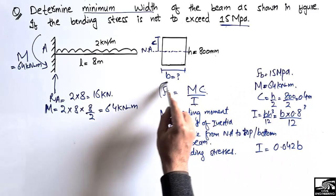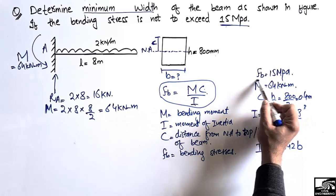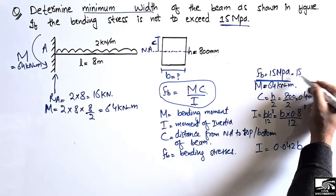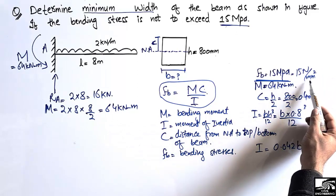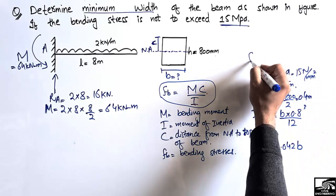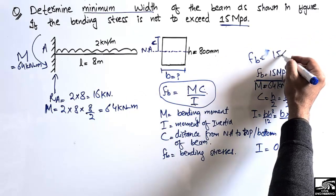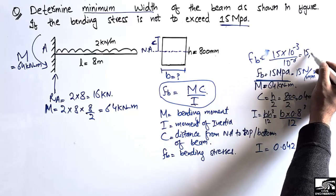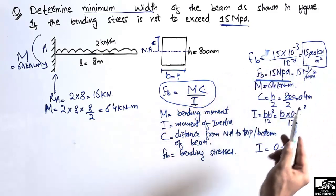Now we have all the parameters. However, keep in mind that 15 megapascal means 15 N/mm², and we need to convert this to kilonewton per meter squared. Multiplying by 10⁻³ and dividing by 10⁻⁶, it comes out to be 15,000 kN/m². We can now use this value for the bending stress to find B, ensuring consistent units throughout the formula.